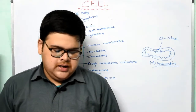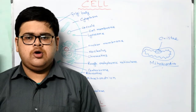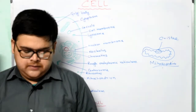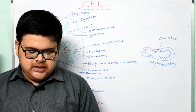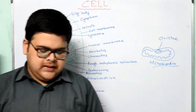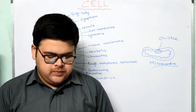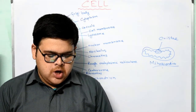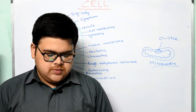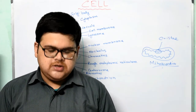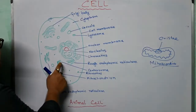Centrosomes are present only in animal cells, not in plant cells. They are found near the nucleus and are not membrane-bound. Centrosomes represent an area of clear cytoplasm containing two cylindrical bodies positioned at right angles to each other. These cylindrical bodies are called centrioles. Centrosomes help in the formation of spindle fibres during cell division.